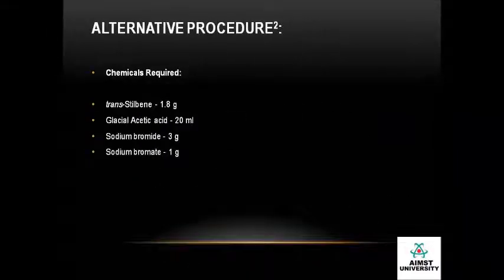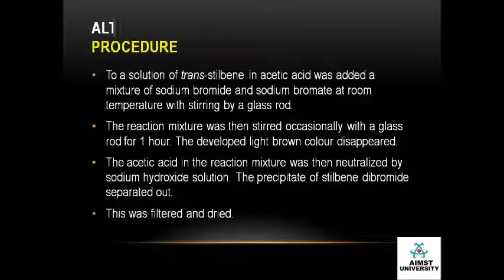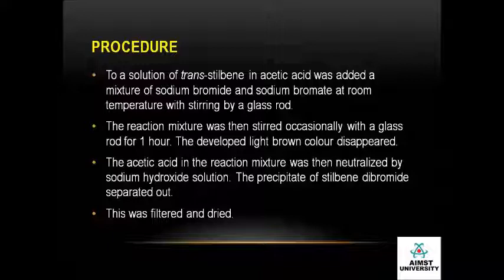Let's see the alternative procedure for the bromination of trans-stilbene. The chemicals required are: trans-stilbene, glacial acetic acid, sodium bromide, and sodium bromate. Take trans-stilbene in glacial acetic acid and add a mixture of sodium bromide and sodium bromate at room temperature with stirring using a glass rod. The reaction mixture is then stirred occasionally for about one hour, until the developed brown color disappears.